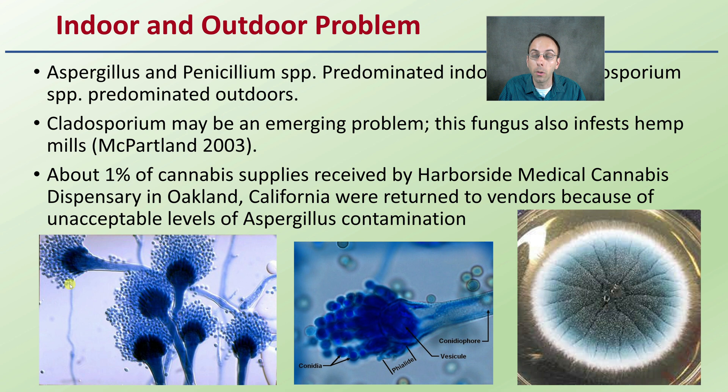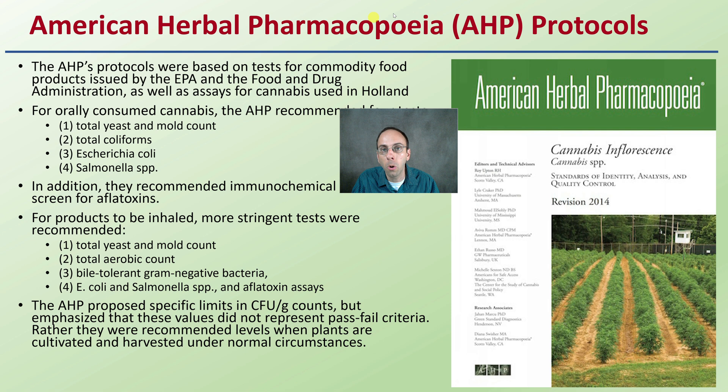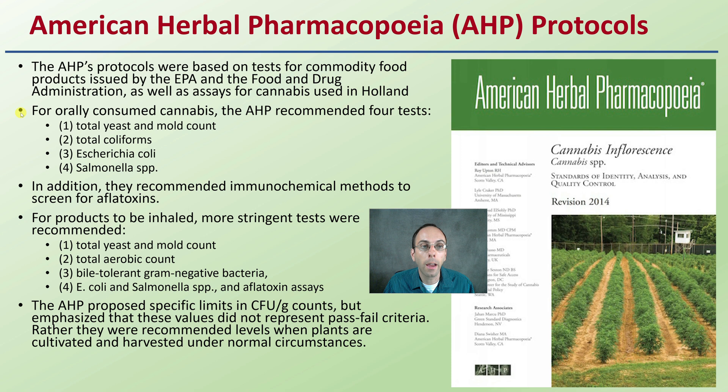The American Herbal Pharmacopoeia (AHP) protocols are based on tests of commodity for food products issued by the EPA and FDA, as well as assays for cannabis used in Holland. For orally consumed cannabis, the AHP recommends four tests: total yeast and mold counts, total coliforms, E. coli, and Salmonella testing. In addition, they recommend immunochemical methods screened for aflatoxins. For products to be inhaled, the following tests were recommended: total yeast and total aerobic counts.